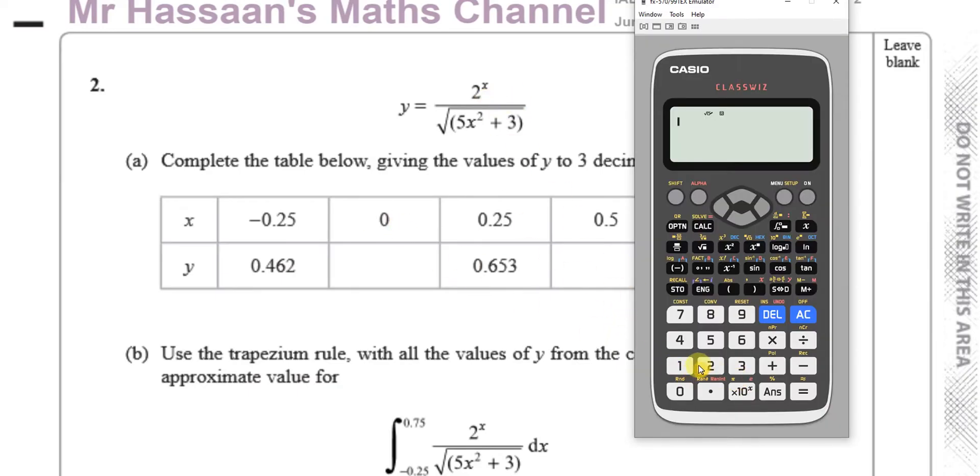We have 2 to the power of 0 which is going to be 1. I'll put it in the calculator because I can just replace with what I need. So 2 to the power of 0 over the square root of 5 times 0 to the power of 2. I know that's 0 but I'm just getting it ready for the other values as well. So that's going to be 1 over the square root of, that's squared and then plus 3 under the square root.